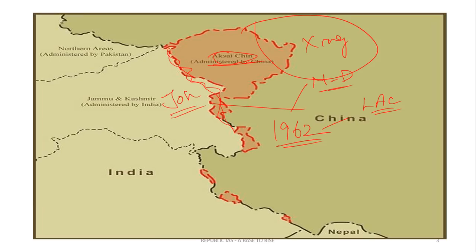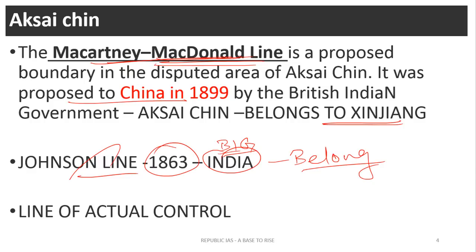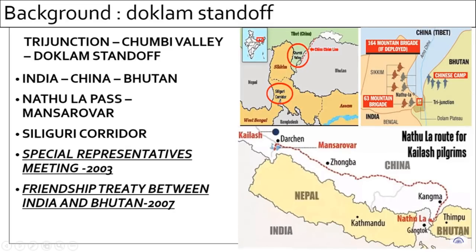From a UPSC prelims point of view, you should know what the Johnson line is associated with and what the McCartney-McDonald line is associated with. The next zone is with respect to Sikkim — that is the Doklam Standoff.